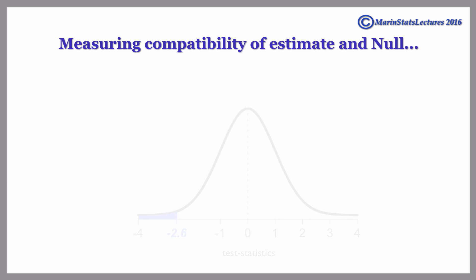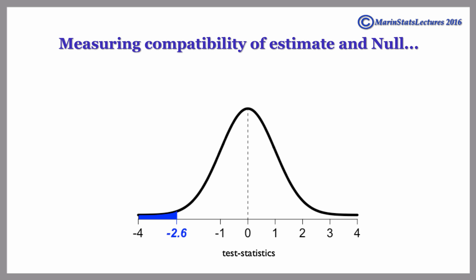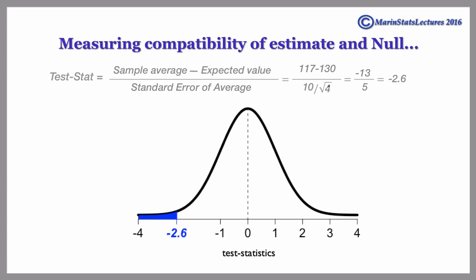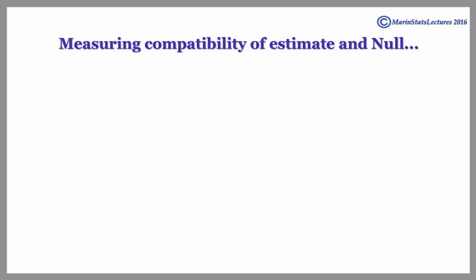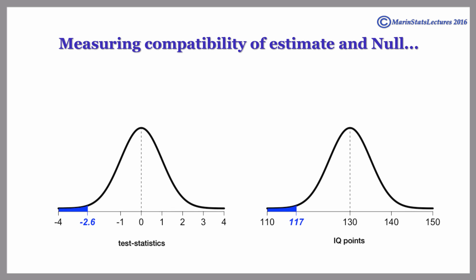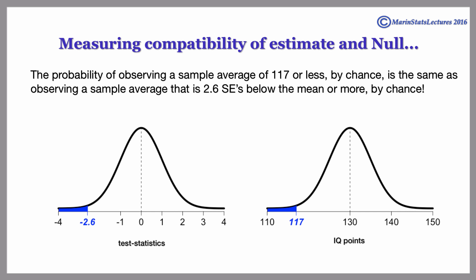We've also seen that we can look at this in terms of what we're calling a test statistic. Assuming the null is true, the probability of observing a sample average of 117 or less by chance is the same as observing a sample average that is 2.6 standard errors below the mean or more by chance.